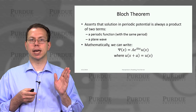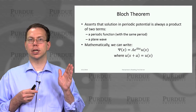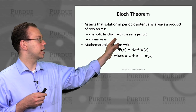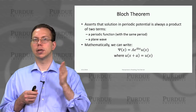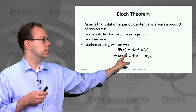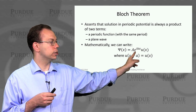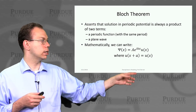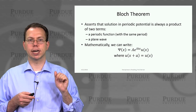So now we need to unpack what that means exactly. The solution in the periodic potential has to be a product of two terms: first, a periodic function with the same period as the periodic structure itself, and then a plane wave. We can write down all our solutions in this form: our wave function psi equals an arbitrary constant times e to the ikx times u of x, where u of x plus a — a being the periodicity — equals the original u of x.